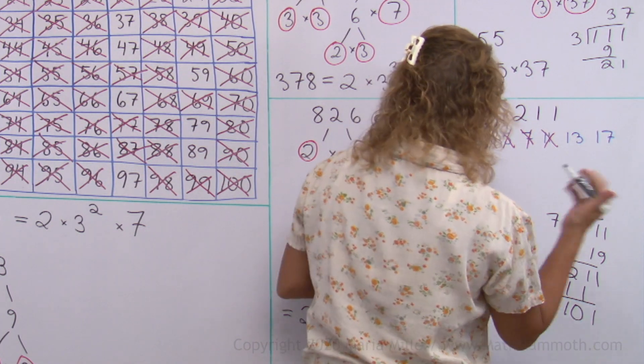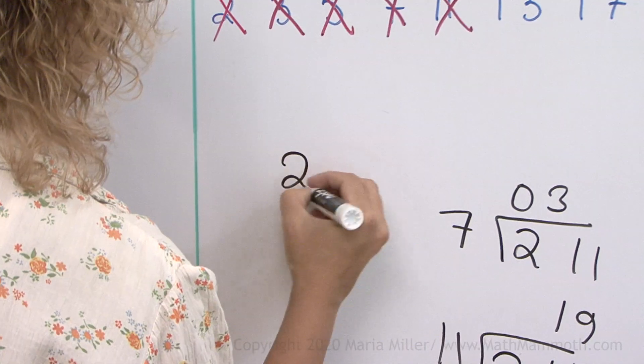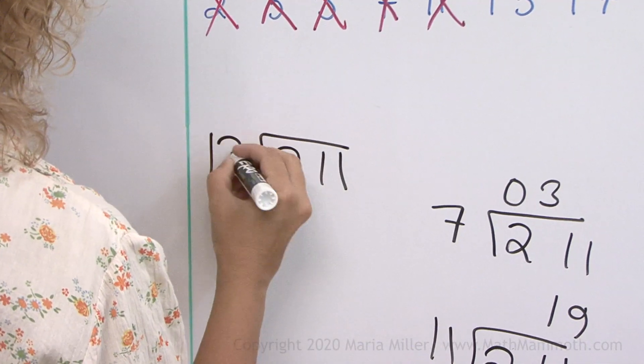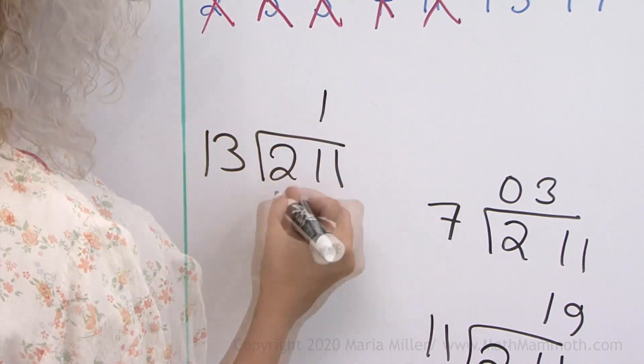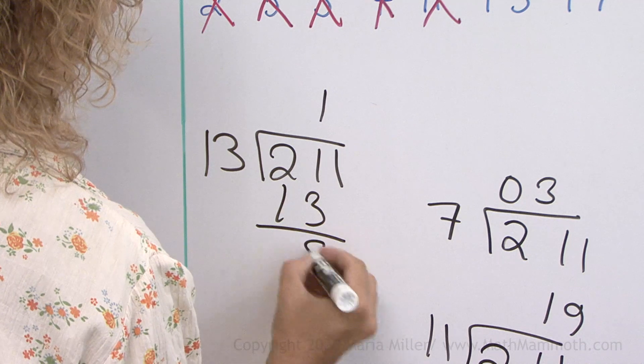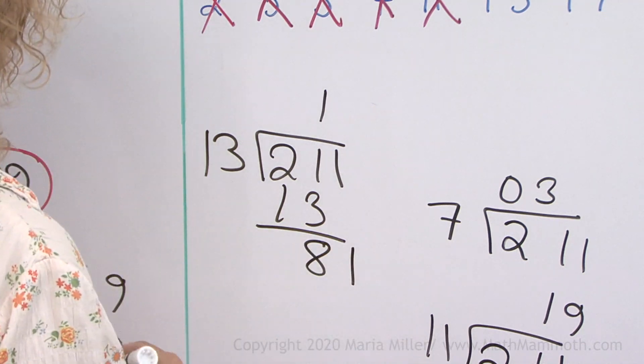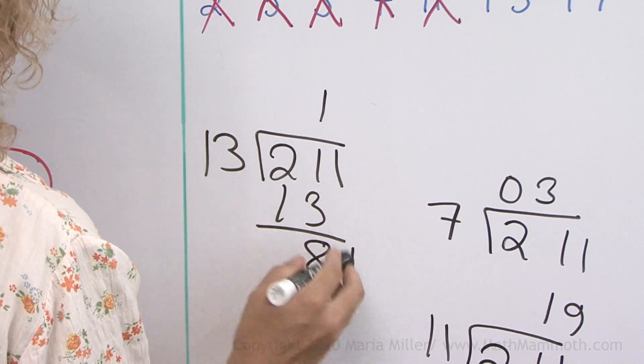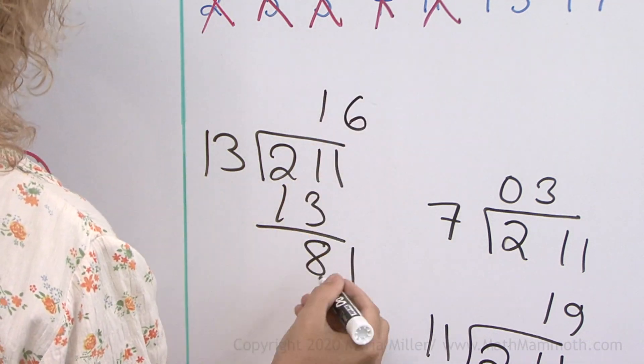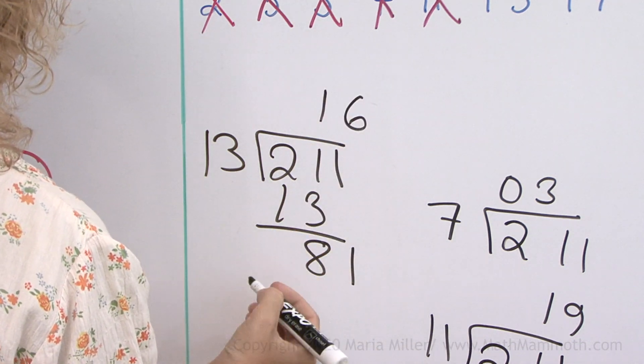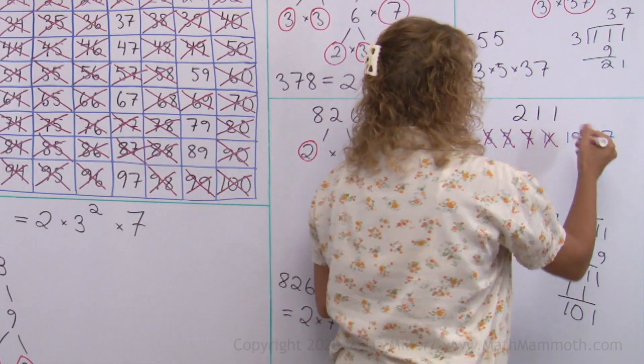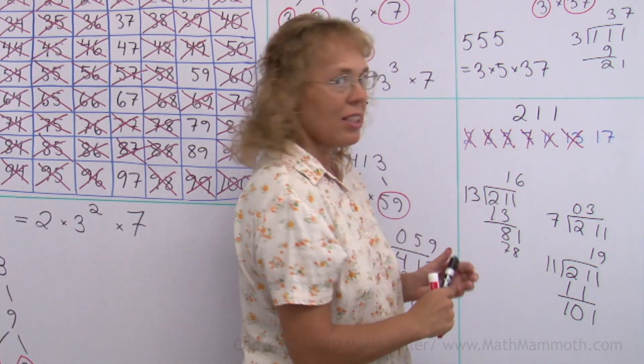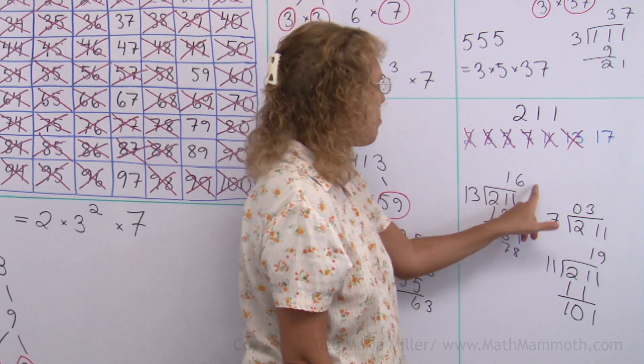Then next is 13. 13 goes into 21 once. Then we get 81. It goes 6 times, but it's not going to be an even division once again. So it's not divisible by 13 either. Notice that my answer here would have been 13 times 16 point something.